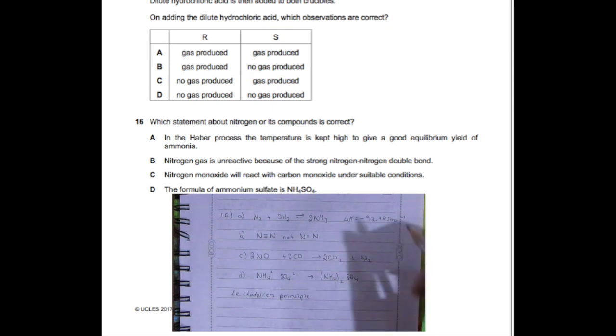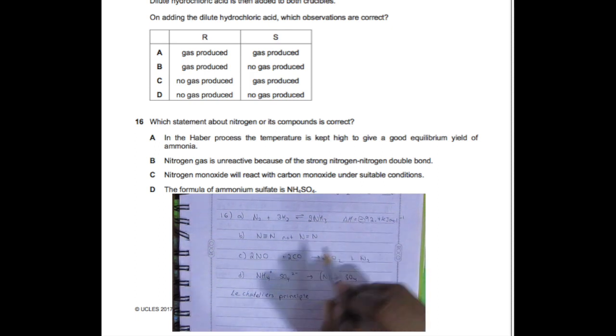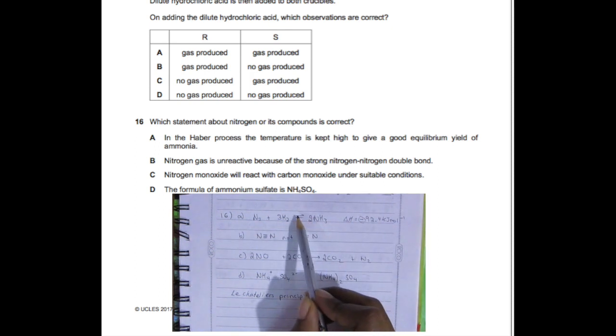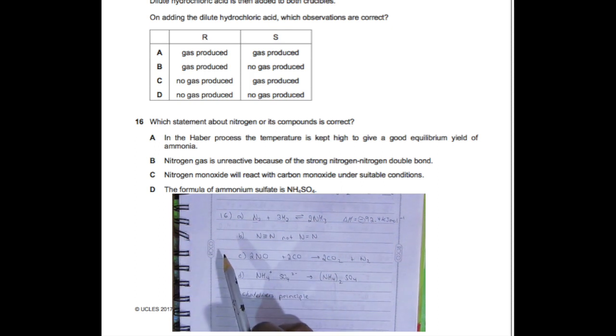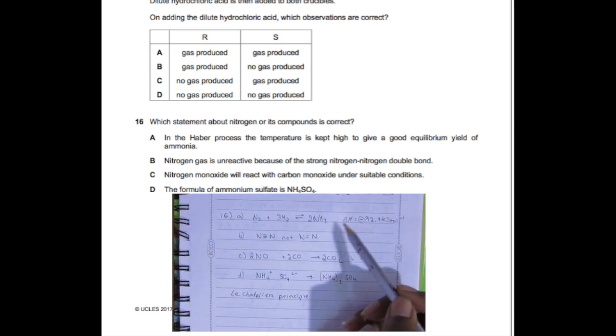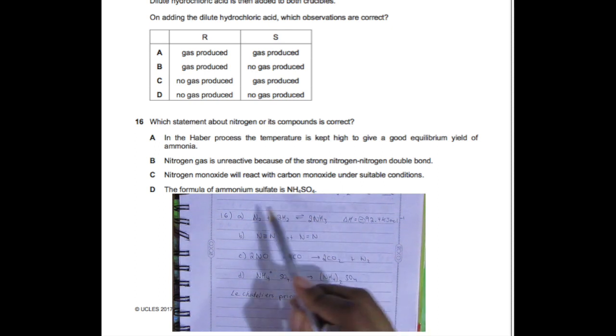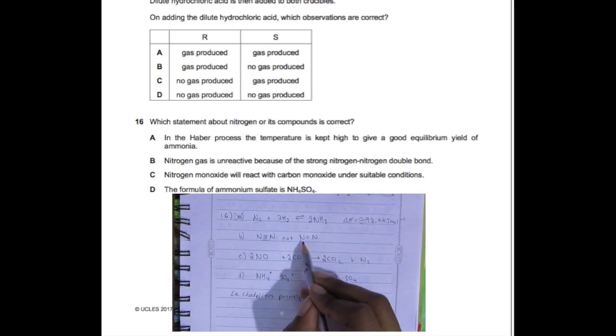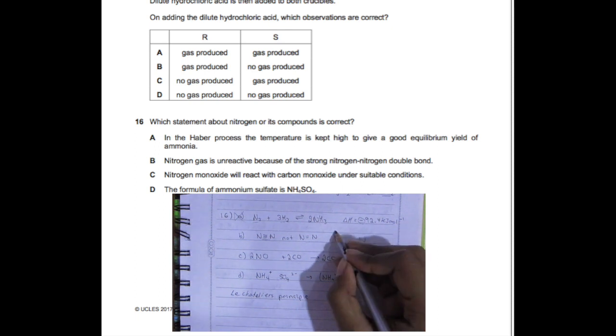Question 16: Which statement about nitrogen or its compounds is correct? A tells us the Haber process temperature is kept high to give a good equilibrium yield of ammonia, but that's incorrect because the forward reaction is exothermic. According to Le Chatelier's principle, if one or more factors affecting an equilibrium is changed, the position shifts in the direction that reduces or opposes this change. Because we're increasing the temperature but it's already exothermic, it's going to favor the reverse reaction, producing nitrogen and hydrogen.